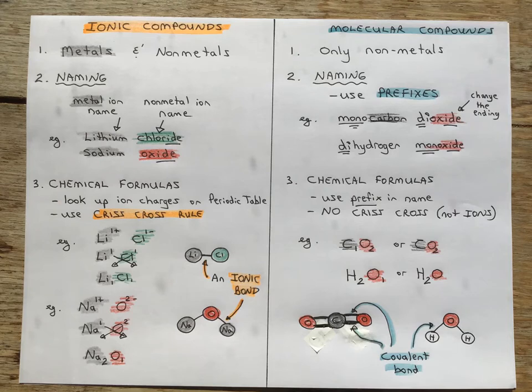Here's a review of ionic and molecular compounds. Ionic compounds always start with a metal. Molecular compounds only have non-metals, so they always start with a non-metal.